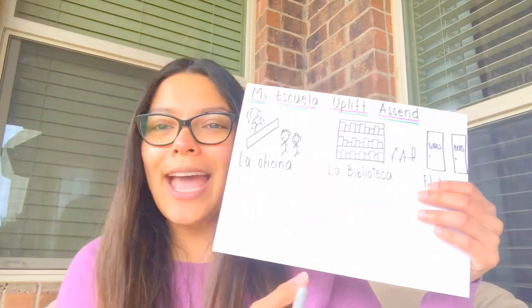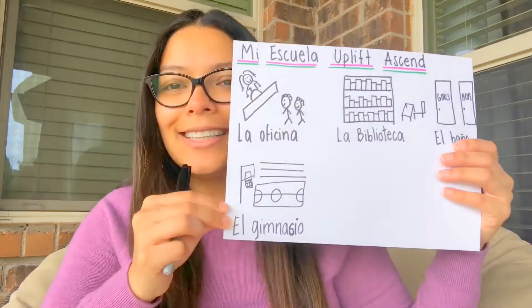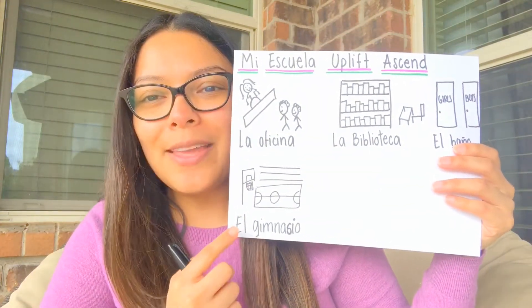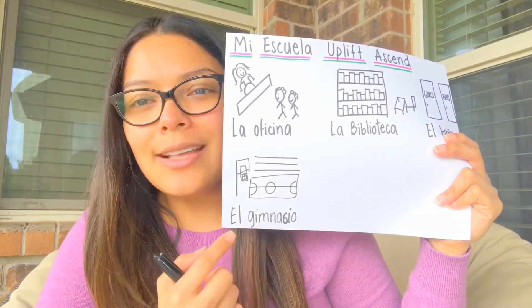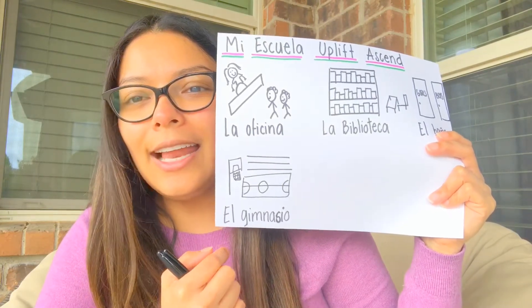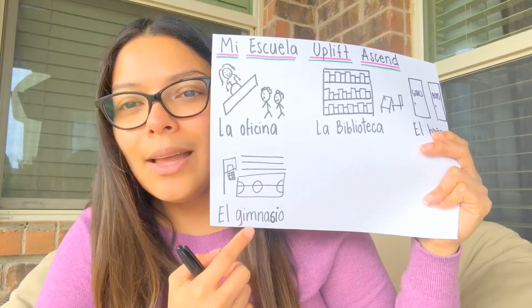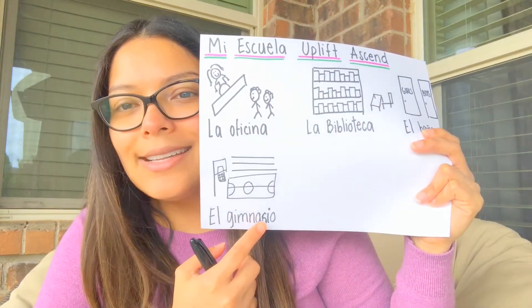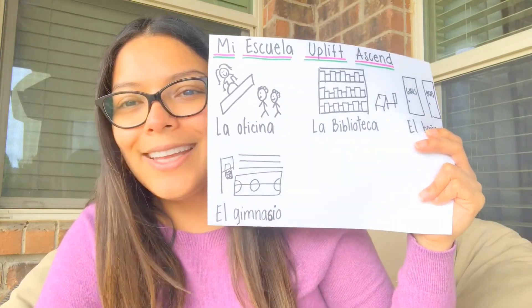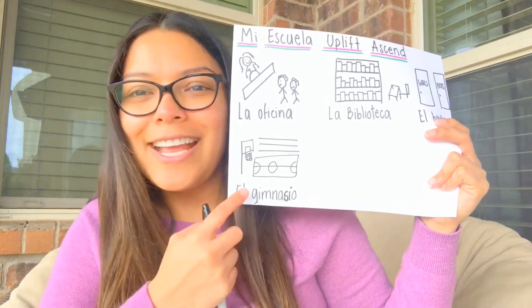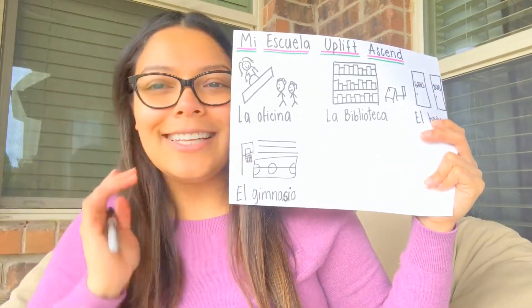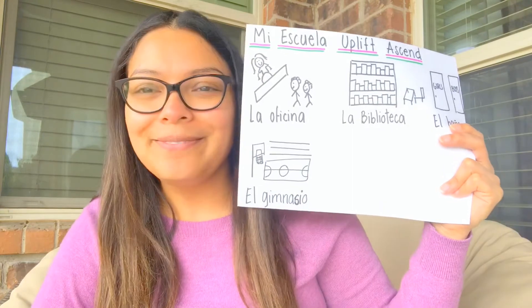Así que vamos a dibujar. So, let's draw el gimnasio. Les voy a enseñar el mío. I'm going to show you my gimnasio. And please remember to write the word. Y también recuerda escribir el nombre. I'm going to spell it for you. Lo voy a deletrear. El gimnasio: G-I-M-N-A-S-I-O. Gimnasio. Repeat after me: Gimnasio. Awesome. And I drew a basketball field. Y yo dibujé una cancha de basketball.